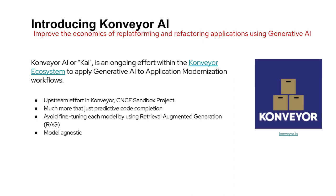Another interesting part about Konveyor AI is that it's not locked into a specific model — it can use multiple models. So if you have .NET code that needs to be modernized, you might find a very specific model that helps with that. You should have the ability to choose the right model for the right language, framework, and tools that fit your needs and give you the right output.